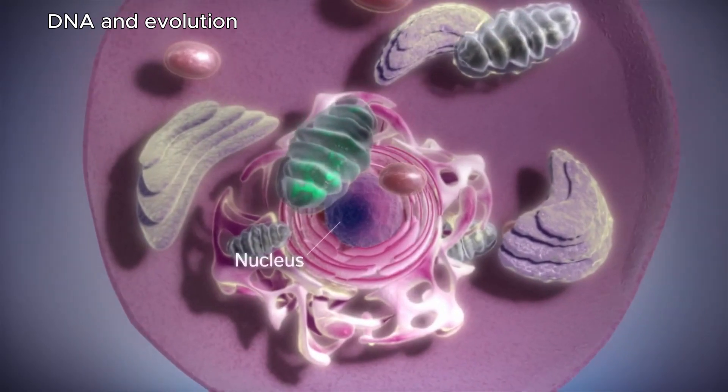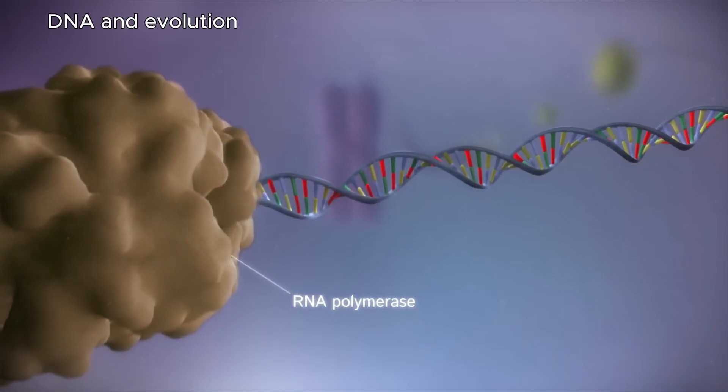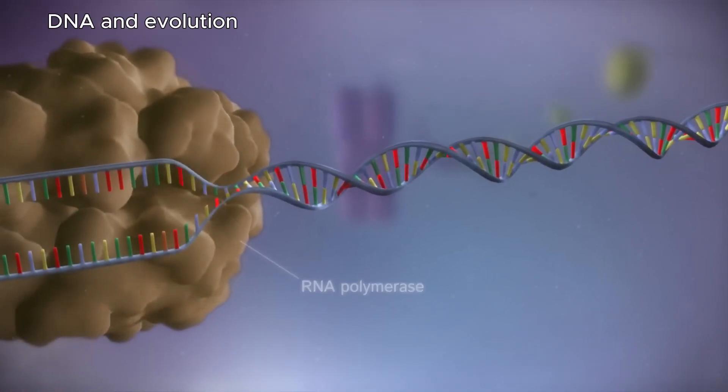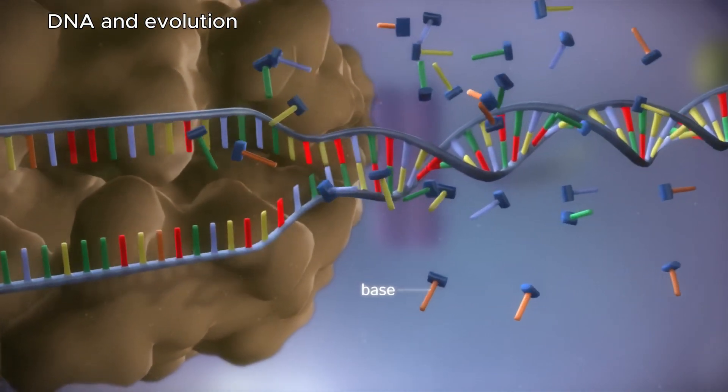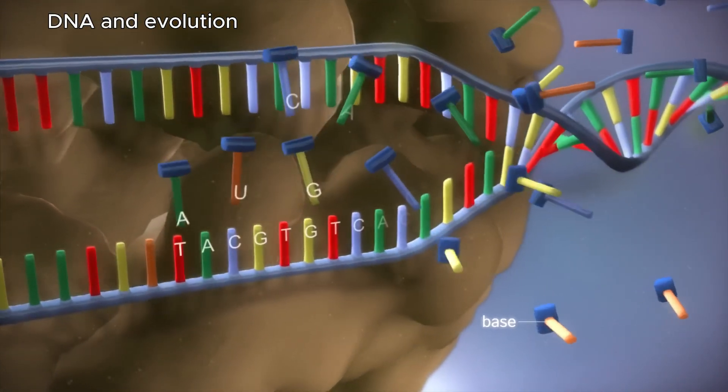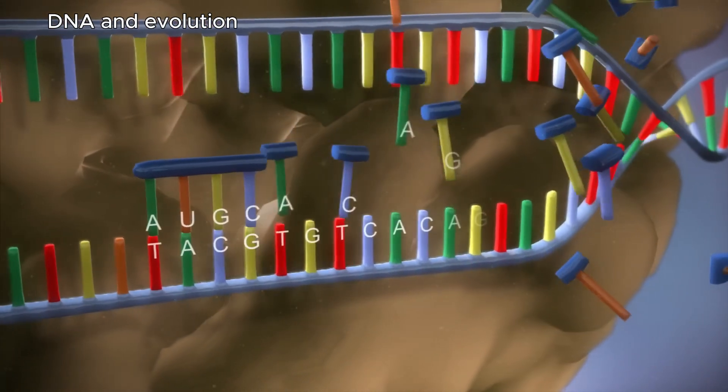Think of DNA like a zipper. It can unzip and then zip back up again, but during the replication process, mistakes can occur. Genes can be misplaced, mismatched.